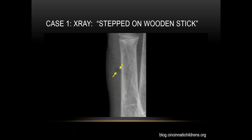Here are a couple of cases of radiolucent foreign bodies on x-ray. In this first case, we have an image of a foot. Without the yellow arrows pointing out the subtle area of lucency, most of us would not appreciate the foreign body in this patient with a history of stepping on a wooden stick. It may just look like gas or fat, so something to be aware of.